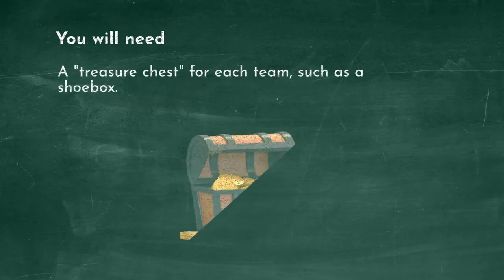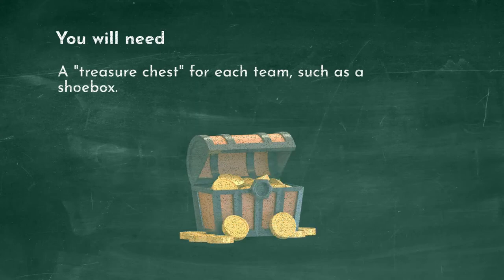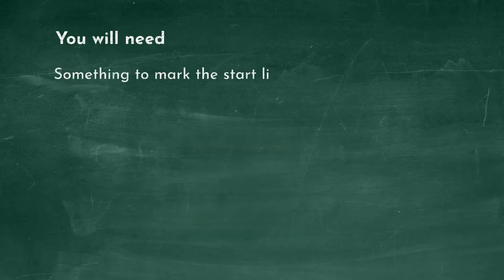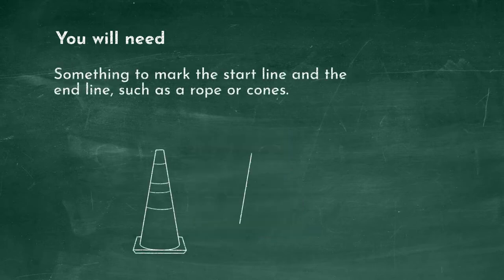A treasure chest for each team, such as a shoebox. Something to mark the start line and the end line, such as a rope or cone.